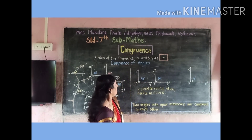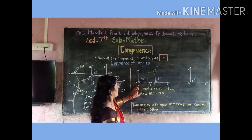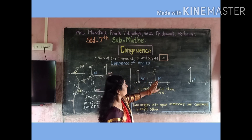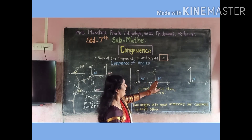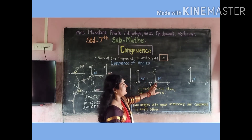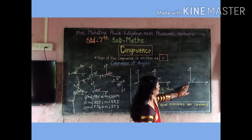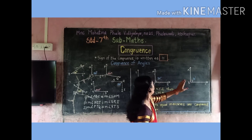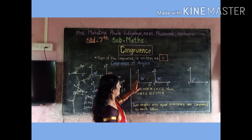In other words, we say that if the first angle is congruent to another angle, and that angle is congruent to a third angle, then the third angle is congruent to the first angle.